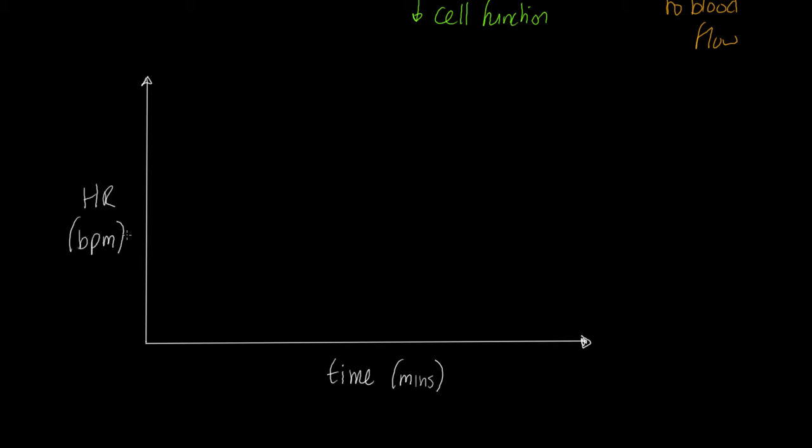And on my y-axis, I'm going to have HR, or heart rate, and we're going to measure this in beats per minute. Now, you probably agree with me that let's imagine this is going to be like a classic curve. Let's imagine that someone goes out for a 45-minute run or something like that. How would we plot this? Well, first of all, I'm not going to put any values in. But look, here's their resting heart rate. Here's the start of exercise. Here's the plateau or the steady state. And here's the end of exercise and the recovery period.